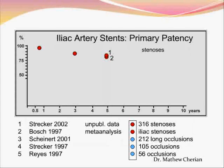Looking at patency rates: for Category 1, Category 2, and Category 3 lesions, patency rates are close to 75 to 80% at the end of 5 years. Thus, endovascular treatment should be the first line of treatment for unilateral aorto-iliac lesions in Category 3 lesions, and of course it is the treatment of choice for Category 1 and Category 2.